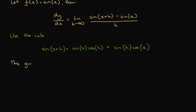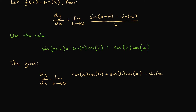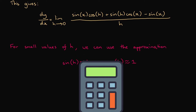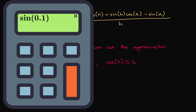This gives dy/dx equal to the limit as h approaches 0 of [sine x cos h plus sine h cos x minus sine x] all divided by h. Now for small values of h, we can use the approximation that sine h is approximately h and cos h is approximately 1. You can verify this with a calculator — the sine of a small value is almost exactly equal to that value, and the cosine of a small value is almost 1.